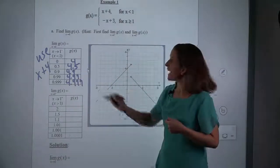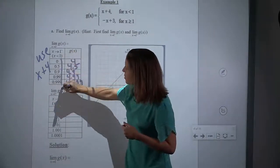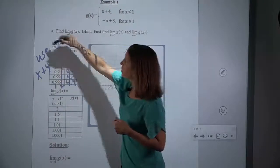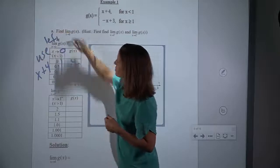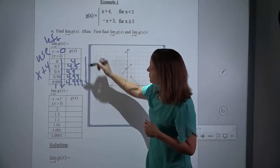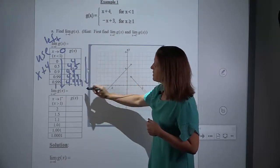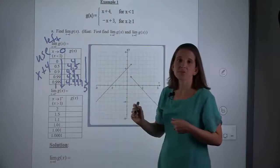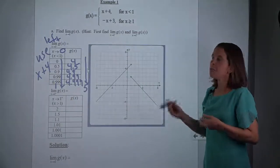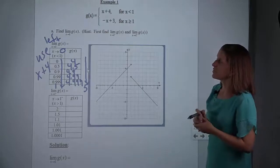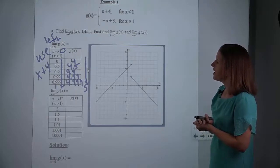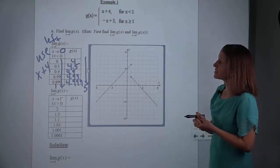So what we want to see is: as x is getting closer and closer to 1 from the left of 1, what are our y's getting close to? If you look at these values, you can see that they're getting closer and closer to a value of 5. That's how we can use a table to determine this. But I also want to show you what's happening graphically.